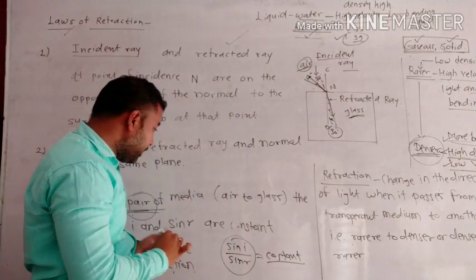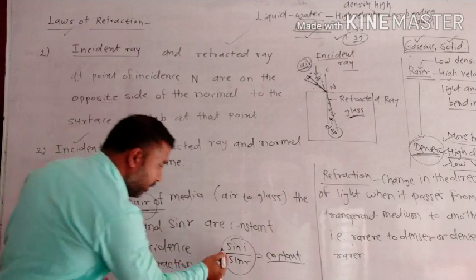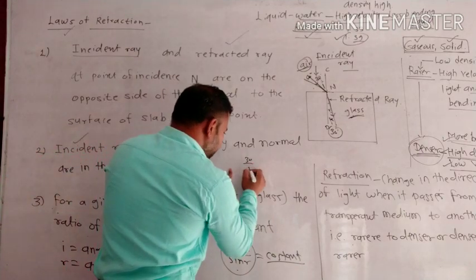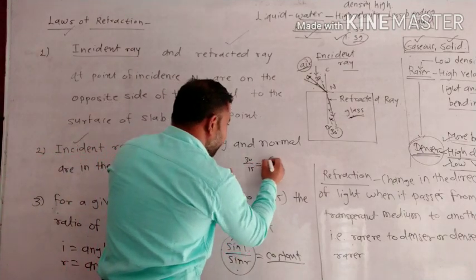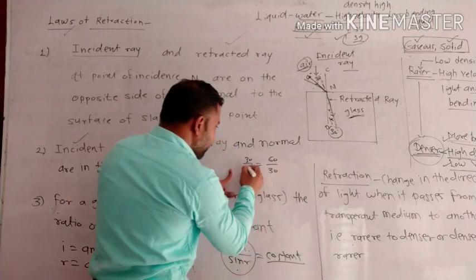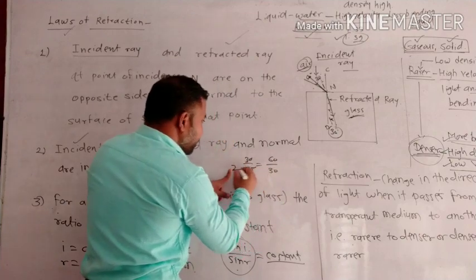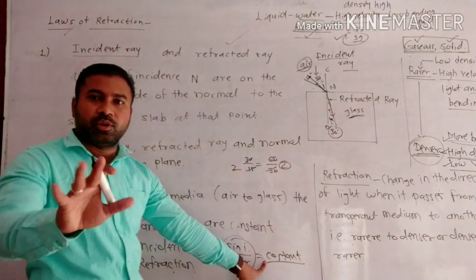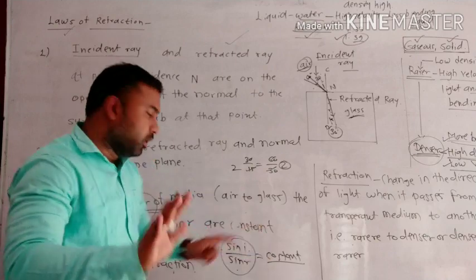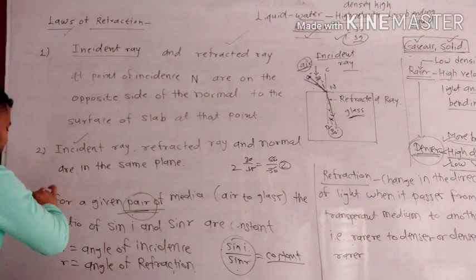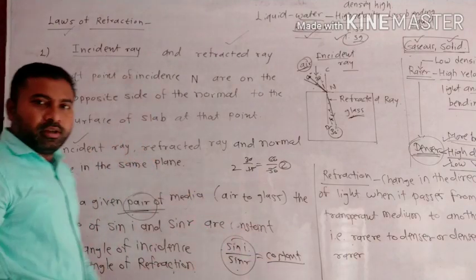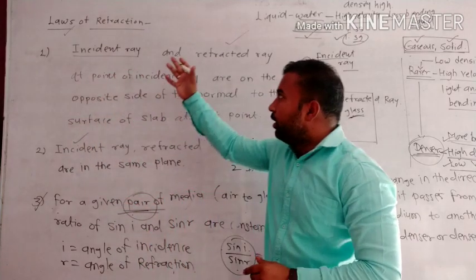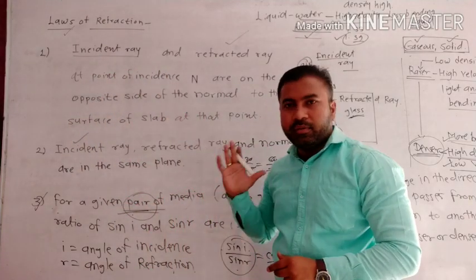The third law of refraction states that for a given pair of media, the ratio sine i upon sine r is equal to a constant. This is the third law. In this way, we learned today about the laws of refraction.